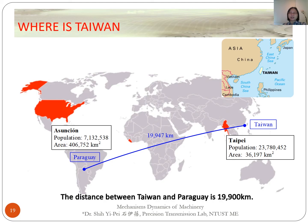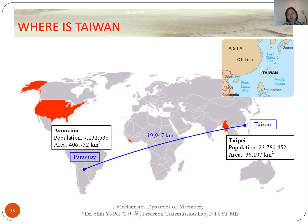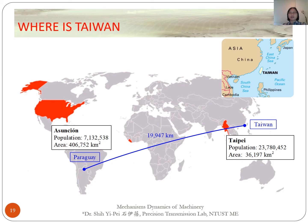The distance between Taiwan and Paraguay is 19,900 kilometers. It is a long journey from Paraguay to Taiwan — it takes around 13 hours by flight. I hear that you will come to Taiwan next year, so welcome to Taiwan. Hope you have a wonderful stay.